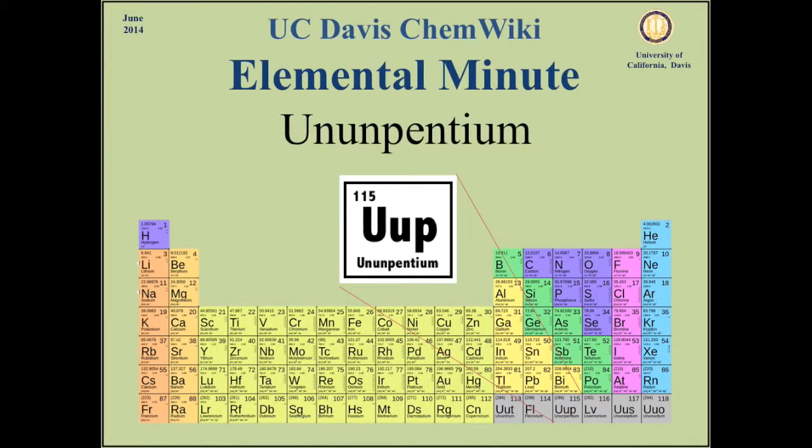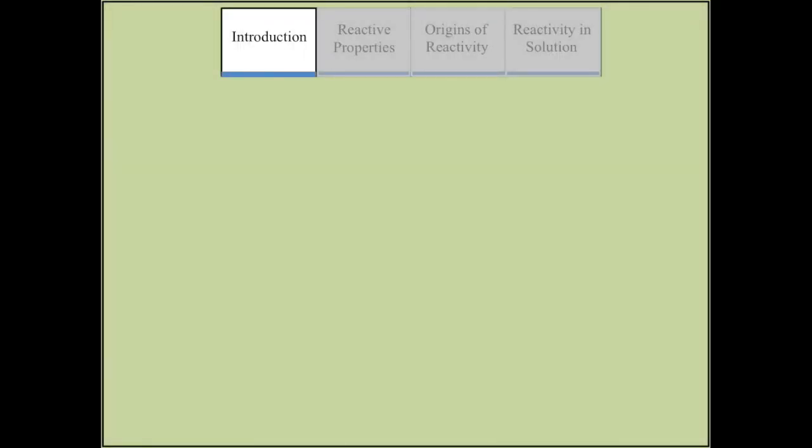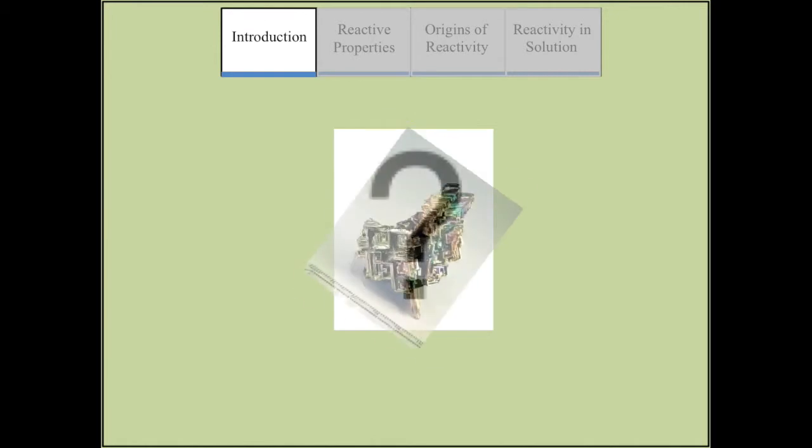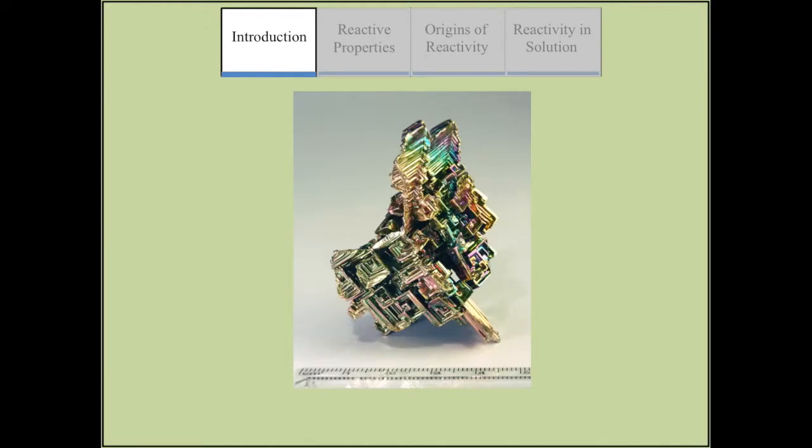Ununpentium is the temporary name for the element in the nitrogen family group with an atomic number of 115. It is expected to retain similar properties to that of bismuth. It is historically known as eka-bismuth, and ununpentium is derived from its atomic number.